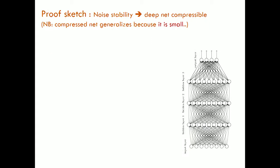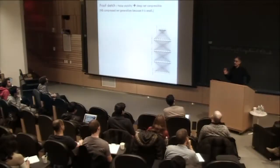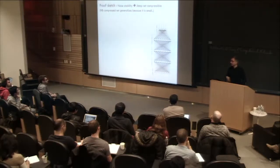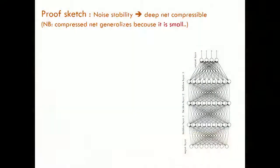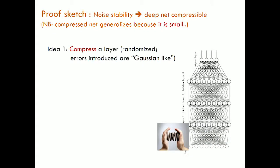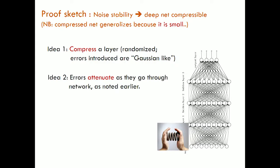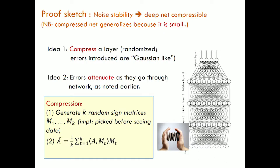Compressing neural nets is a very active area in applied research, because people want to compress a neural net and put it in a cell phone — using less memory and power. People have all kinds of empirical methods to compress neural nets. Our approach just has some provable guarantees. The idea: take a layer and compress it. When you compress it, you introduce errors in its computation. With our compression method, the errors introduced are Gaussian-like — the difference between the true output and what the compressed version gives is Gaussian-like. So these errors are attenuated as they go through the network. You can keep compressing other layers and the end result does not change too much.